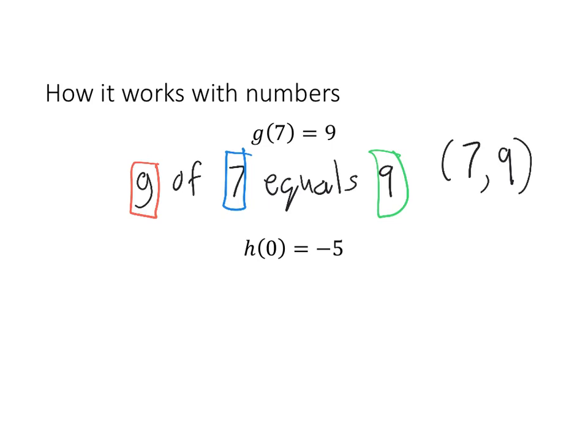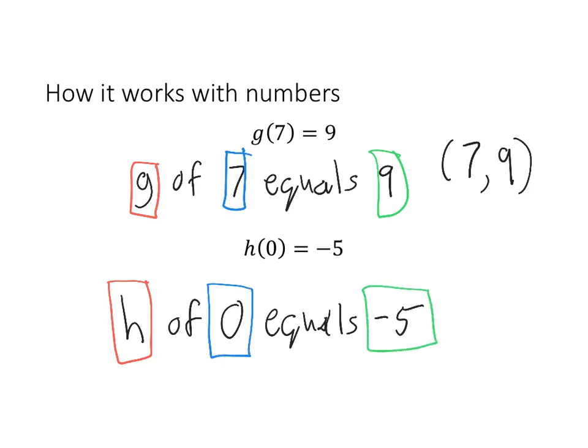The second example we would read as h of 0 equals negative 5. So once again, we have a function named h. It takes the input of 0 and produces the output of negative 5. So if we wanted to write this statement as an ordered pair, the input of 0 gives us an output of negative 5.